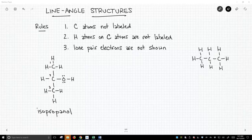And then rule number three, lone pair electrons are not shown. Since our atoms are going to be very predictable in terms of satisfying the octet rule, we're going to assume that we have enough lone pair electrons on atoms to fill up the octet if they don't satisfy the octet rule.